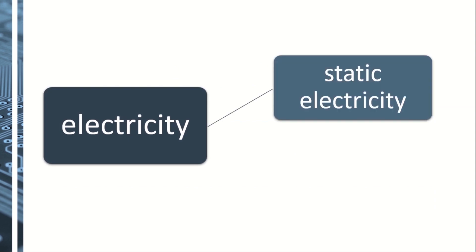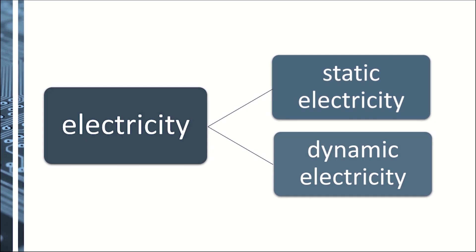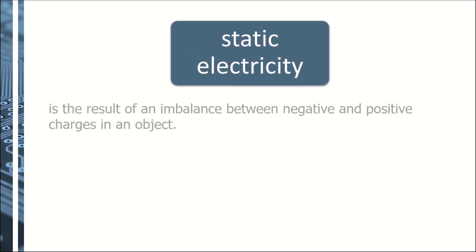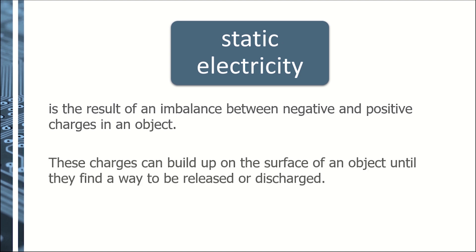There are two types of electricity: static electricity and dynamic electricity. Static electricity is the result of an imbalance between negative and positive charges in an object. These charges can build up on the surface of an object until they find a way to be released or discharged.